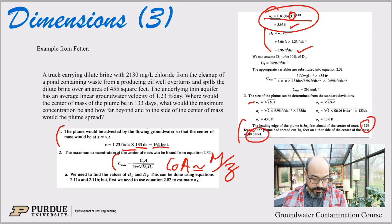So the size of the plume is about 130 feet further from the center. Remember, this is just three standard deviations in front. So 129 feet, and then it has spread out 40 feet away from the middle. So 40 feet on either side, each side.